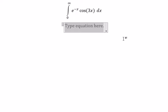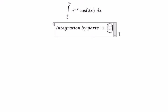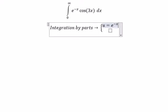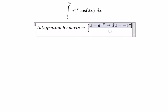We have u and dv. u equals e to the power of negative x, so du equals negative e to the power of negative x dx.